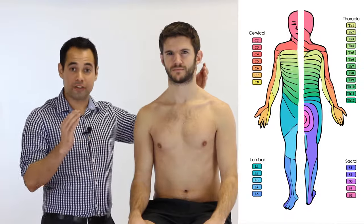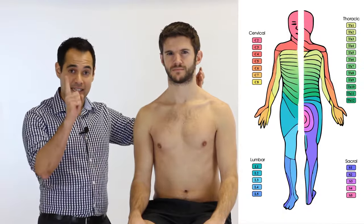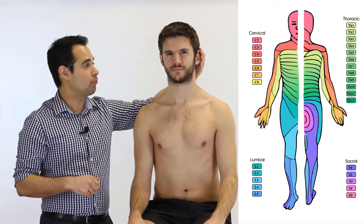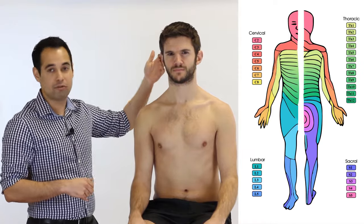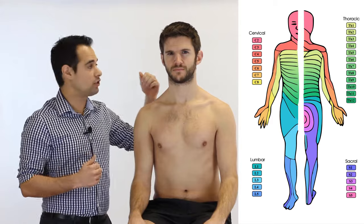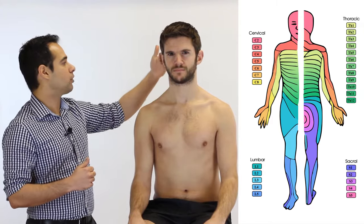We're now going to take you through the dermatomal regions of the upper limb and the neck and head, starting with C2. The C2 dermatome covers the posterior aspect of the head in a C shape — it goes from one ear, posteriorly, round to the other ear.